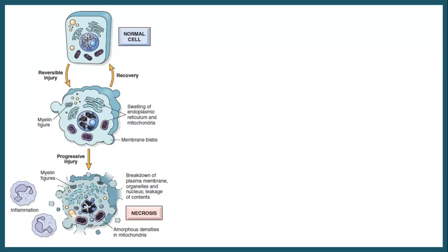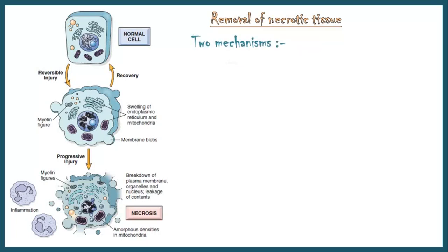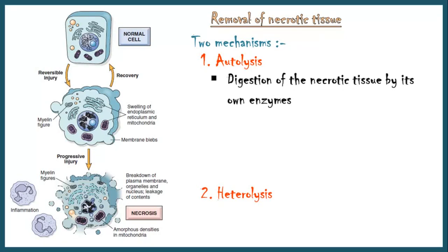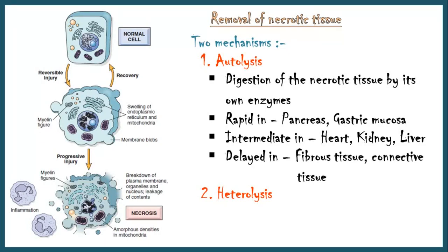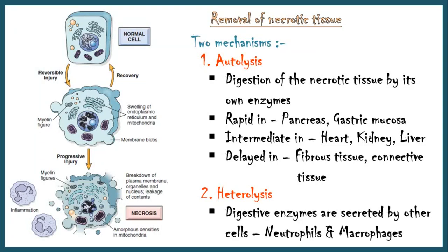Once a cell dies by necrosis, the next step is to get rid of the dead tissue. This occurs by two mechanisms: autolysis and heterolysis. In autolysis, necrotic cells are digested by their own enzymes due to leakage of enzymes during necrosis. It is rapid in tissues which contain large amounts of such enzymes, like pancreas and gastric mucosa; intermediate in tissues like heart, kidney, and liver; and delayed in fibrous and connective tissue. In heterolysis, the digestive enzymes are secreted by other cells like neutrophils and macrophages.